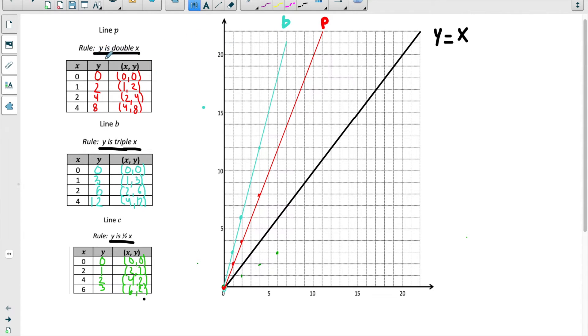Try to make a connection with the line's rules. Remember, line p is y is double x, and line b is y is triple x. You can think about maybe which one is steeper. You're probably noticing that line b is steeper. You can think about it because in this one, y is 3 times x. So the y-coordinate is increasing at a faster rate, whereas line p is y is 2 times x. So the y-coordinate wouldn't be increasing as fast. That's why it's not as steep.